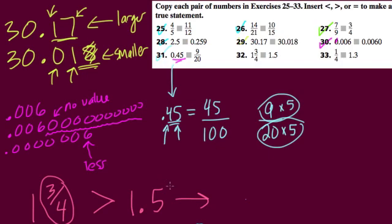So, 3 fourths, a fourth is like a quarter, and a quarter is like 25 cents. So, 3 fourths is $0.75. 1 and 3 fourths is $1.75, and that's bigger than $1.50. So, in this comparison, the mixed number is larger.